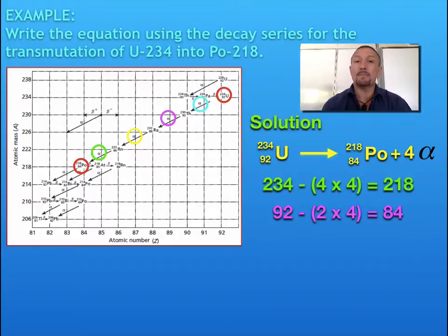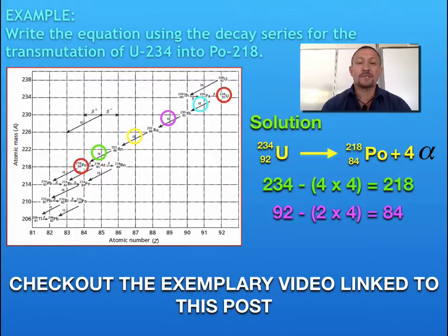What we've now got is a completely balanced equation using the decay series to determine how many particles have been released during that nuclear decay. That's quite straightforward because we're only dealing with alpha decay. I will put up an exemplary video with further examples showing what happens with positron or beta particles. We've got to make sure the left-hand side balances with the right-hand side. Check out that exemplary video on the post on this iTunes U course. I look forward to seeing you again. Bye for now.